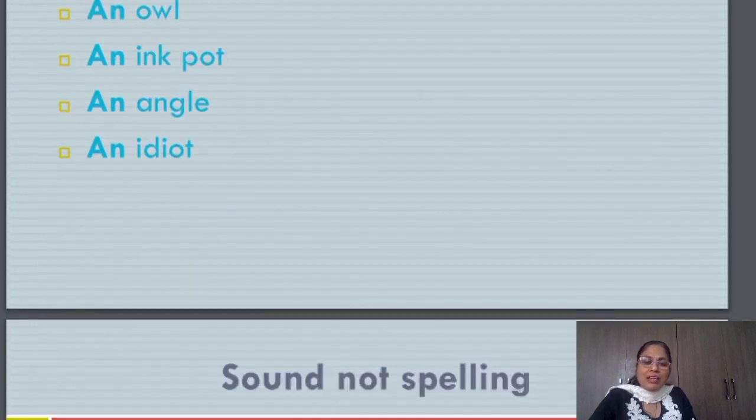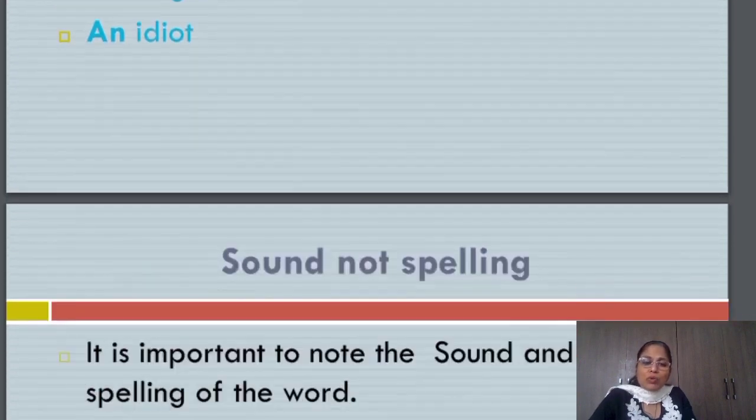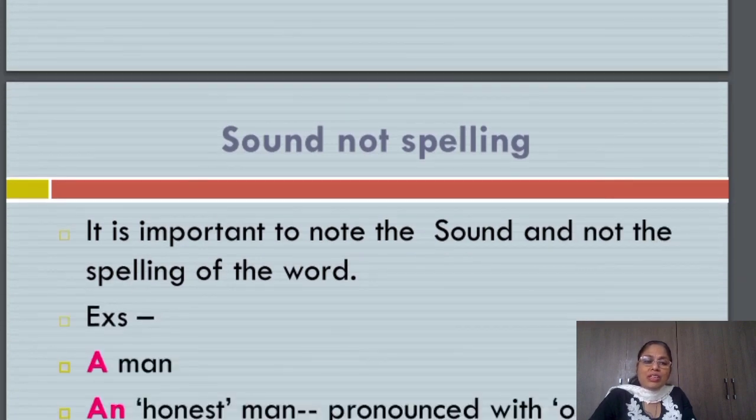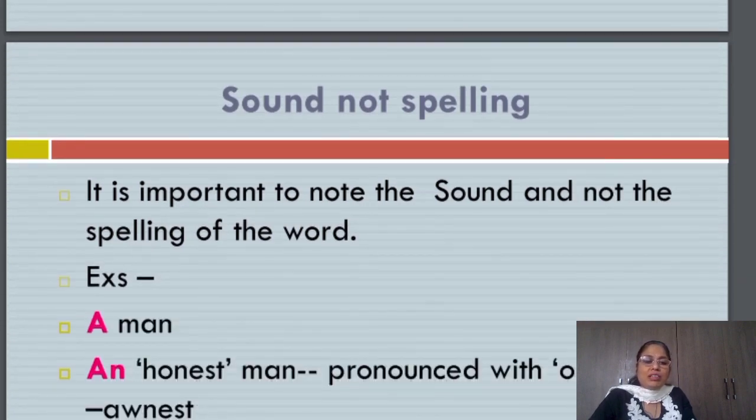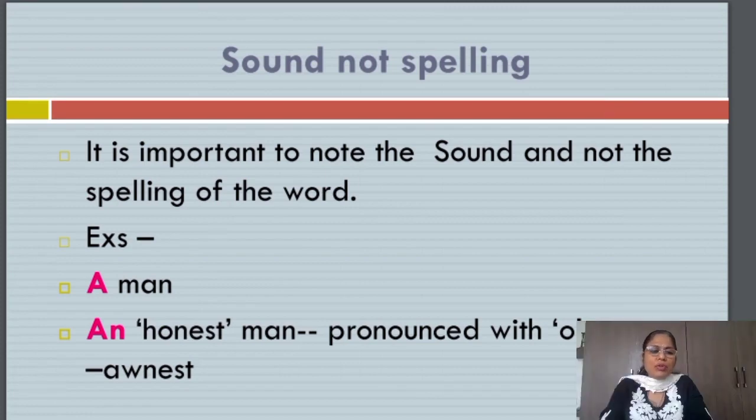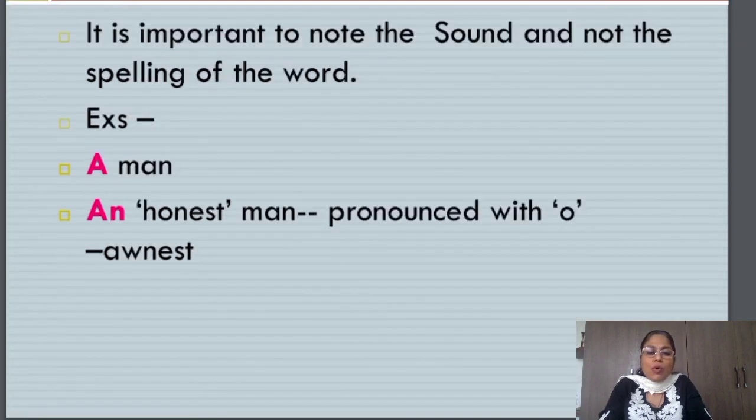It is not the spelling but the sound that is important when we choose between the article A or AN. The word man: a man. Now look at this word: honest. The spelling of the word honest starts with H, but the pronunciation is honest. Why? Because H is silent. So I don't say he is a honest man. I say he is an honest man.